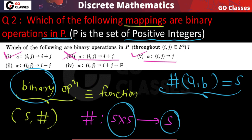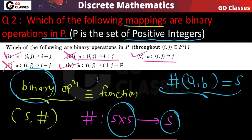Option 2: α(i, j) = i − j. This is not a binary operation because, for example, i = 1, j = 2 gives −1, which is not a positive integer. Option 4: α(i, j) = i + j + i². Yes, this is a binary operation — for any two natural numbers i, j, the result i + j + i² is also a natural number. In the next video we will solve some more questions.